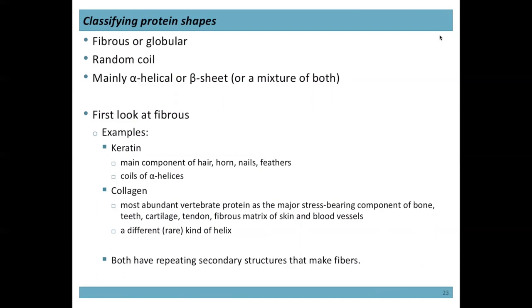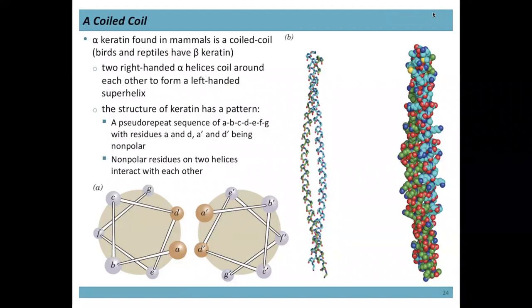Two fibrous proteins we'll examine are keratin and collagen. Keratin is the main component of hair, horn, nails, and feathers — it is a coiled coil: an alpha helix that is itself coiled. Two alpha helices undergo a left-handed twist around each other. There is a pseudo-repeat of amino acid types every seven residues (A–G), where positions A and D tend to be hydrophobic and interact with the corresponding A' and D' positions on the other helix.